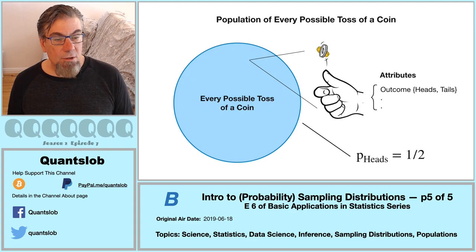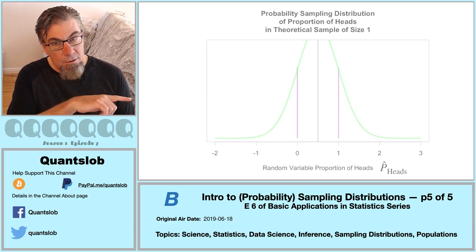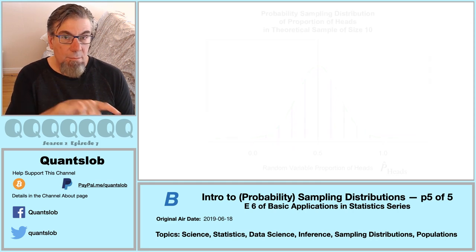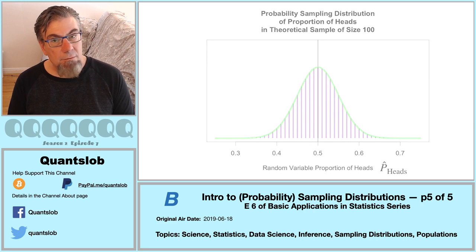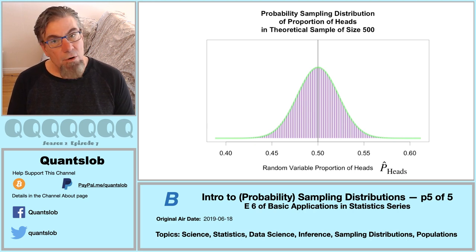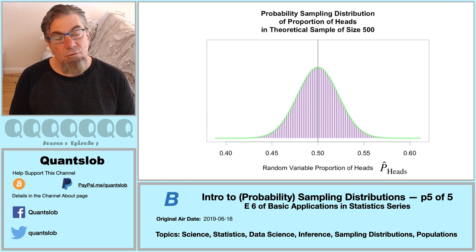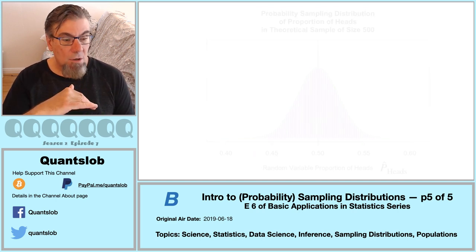Revisiting the coin toss: here's the sampling distribution of a theoretical sample of one element, with the green path added. At sample size 10, the green path sort of follows the tops of the purple lines. At sample size 100, the green path follows the distribution quite nicely. At sample size 500, the green path hugs our sampling distribution very nicely — and all of these sampling distributions are symmetric with the coin toss. So it's not difficult to believe that the sampling distributions all balance on the thin black line marking the population proportion.